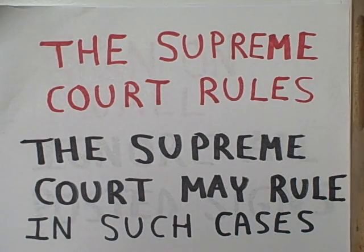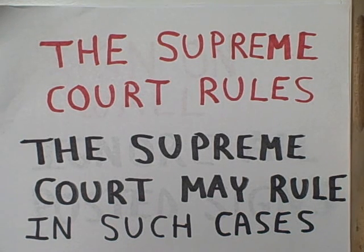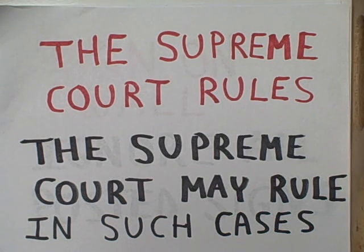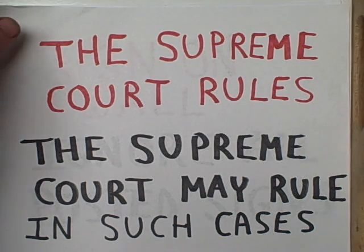Consider the following Supreme Court ruling: the Supreme Court rules that the Supreme Court may rule in such cases. There actually was such a case known as Marbury vs. Madison, when the Supreme Court first declared that it had the power to intervene and pass judicial review on acts of Congress. Such a claim made by the court is self-referential because it passes judgment on claims made by the court. It is reflexive. Is it paradoxical? Not at all — it is not self-contradictory; it is self-affirming.